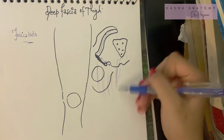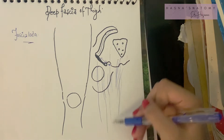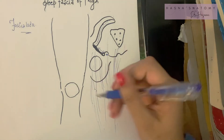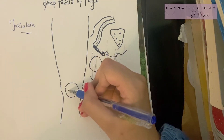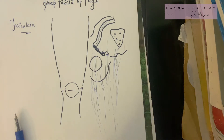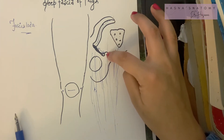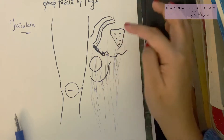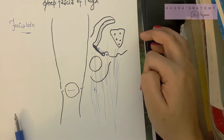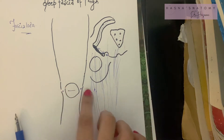It runs down to enclose your entire thigh tightly, and inferiorly the fascia lata attaches at the front and the sides of your knee. Overall, the fascia lata is a tough fibrous sheath enclosing the thigh like a sleeve, attached superiorly to the pubic tubercle, iliac crest, inguinal ligament, and sacrum/gluteal region, and inferiorly to the front and sides of the knee.